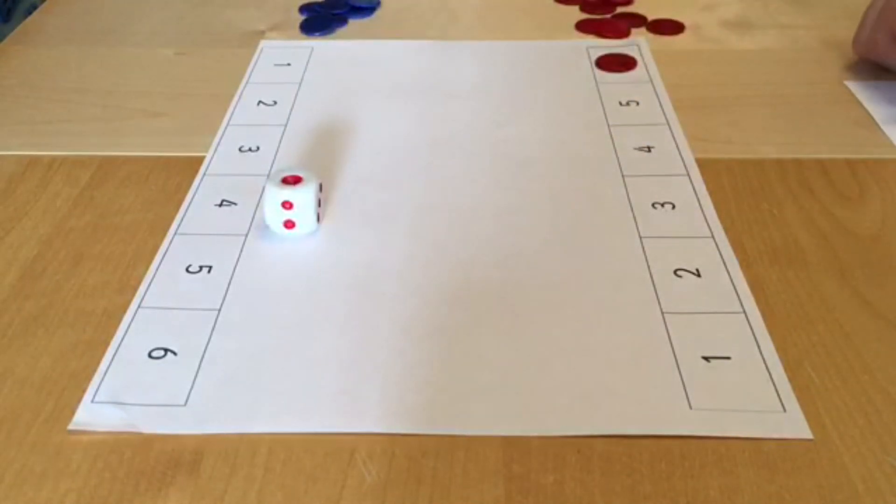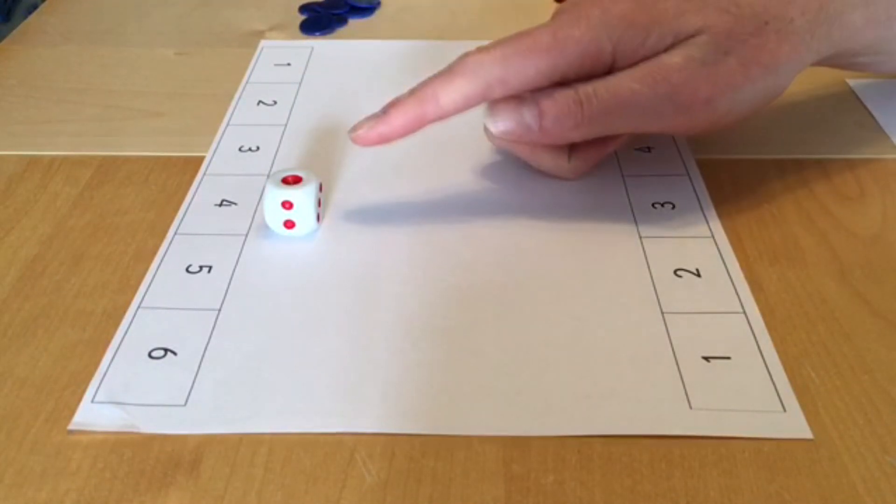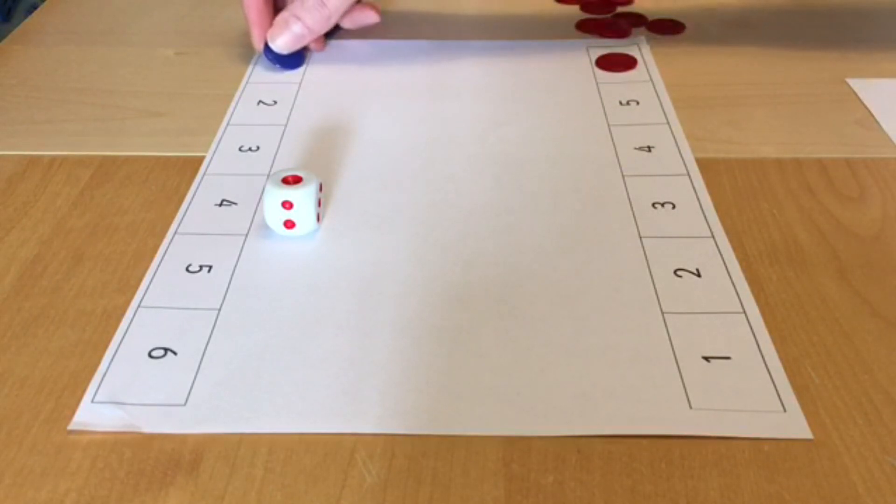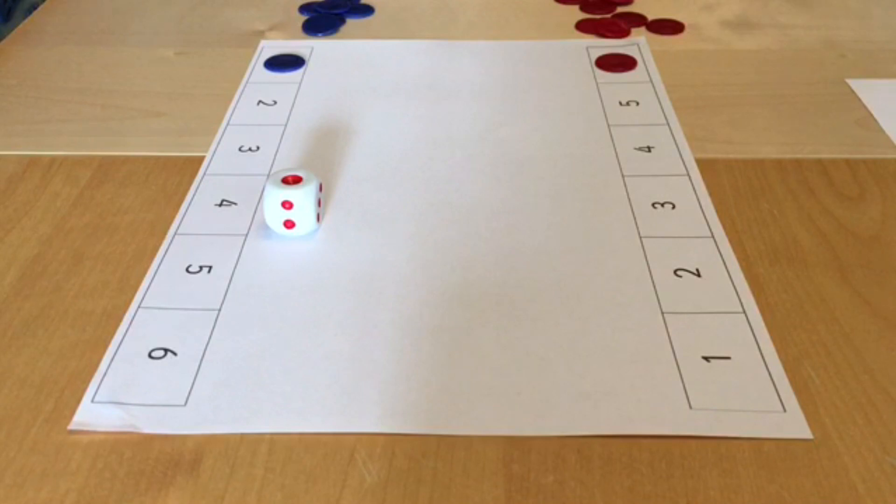Player two then rolls the dice and they try to match the number of dots on the dice to one of their numbers. If they can do it, then they cover it. The winner of the game is the first player to cover all of their numbers.